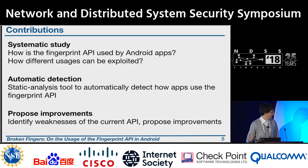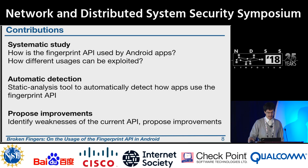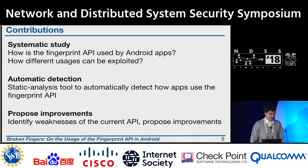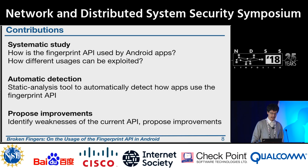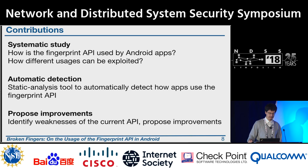In this work, I systematically study the fingerprint API in Android and how it is used by apps. I show how different usages can be exploited, then develop an automatic analysis tool based on static analysis to detect how apps use this API. Finally, I identify some weaknesses of the current API and propose some improvements.